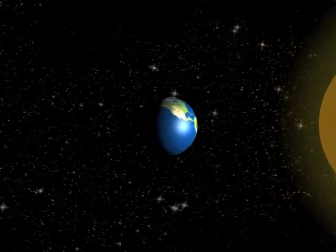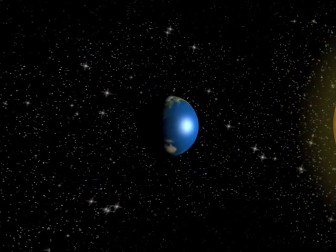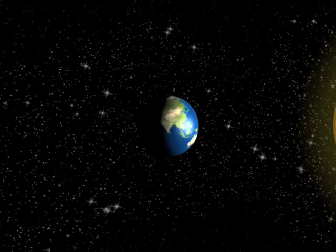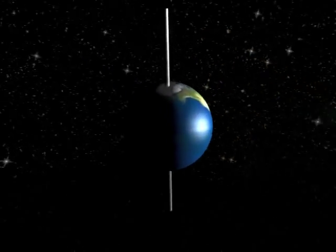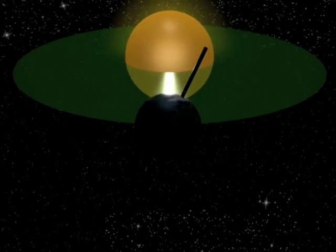The Earth has seasons because its axis of rotation is tilted, a property it shares in common with some other planets in the solar system. It's tilted by an angle of 23.5 degrees to a line perpendicular to its orbital plane shown here in green.